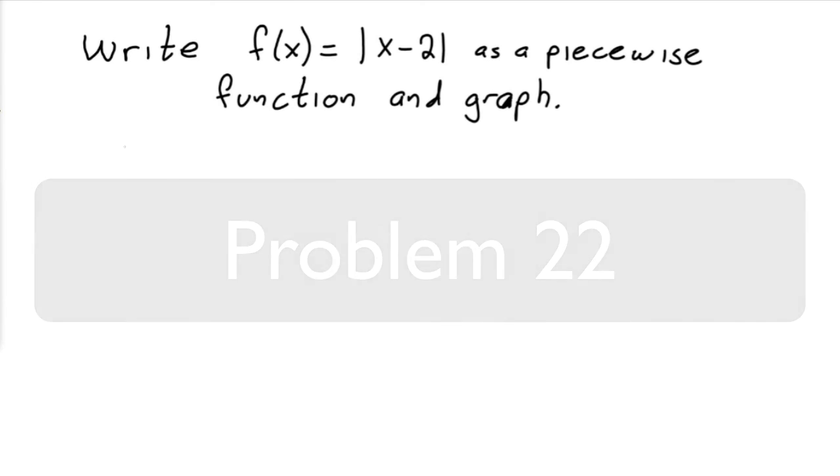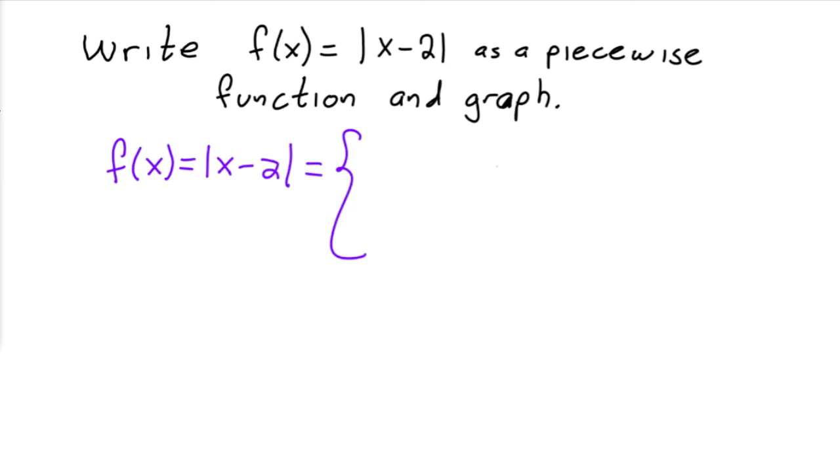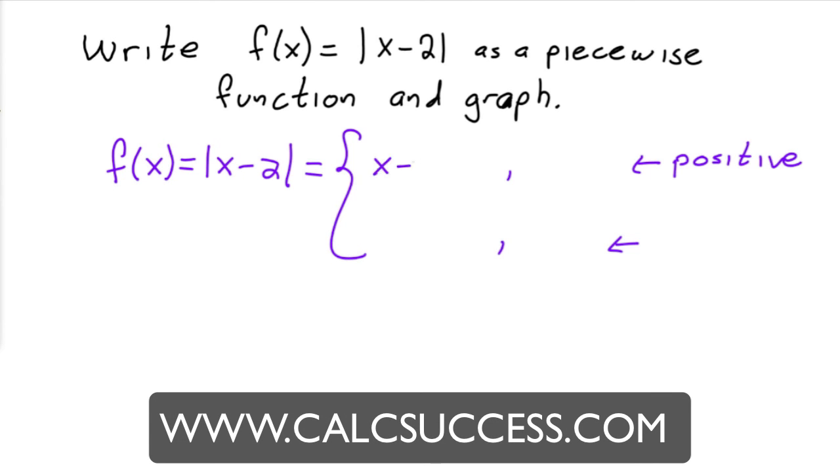This is really important because we're going to be doing this throughout. We want to make sure we know how to write absolute value functions as piecewise functions. The way to do this is you're going to break this guy up into two different functions. The first part is where x minus 2 is positive. And if x minus 2 is positive, then absolute value of x minus 2 is going to equal to x minus 2.